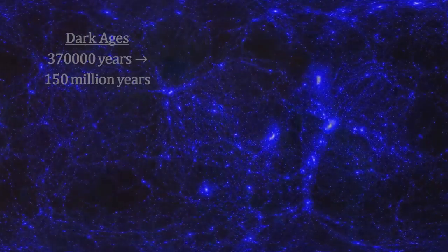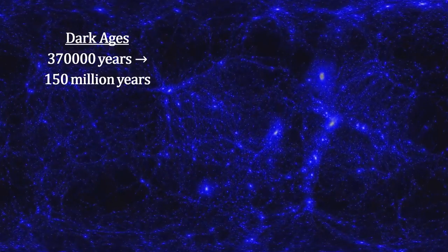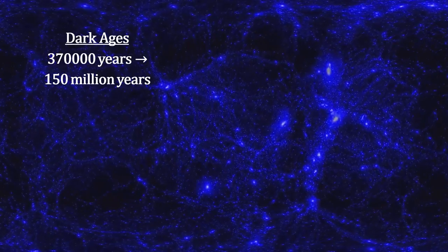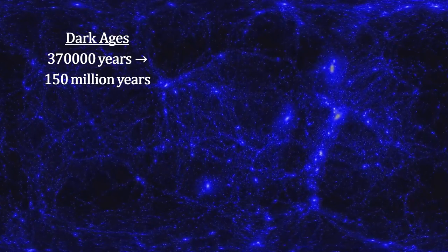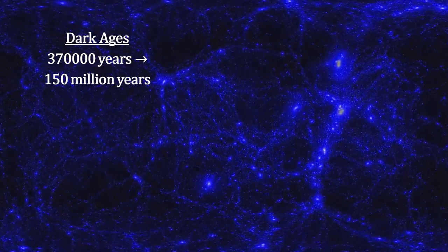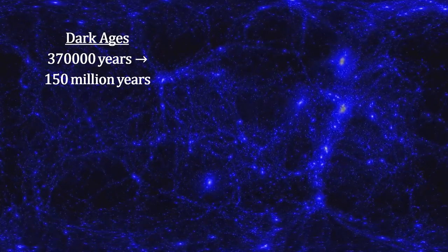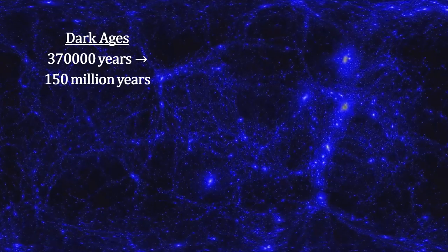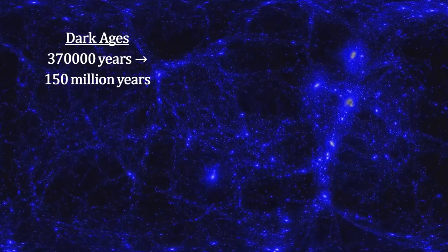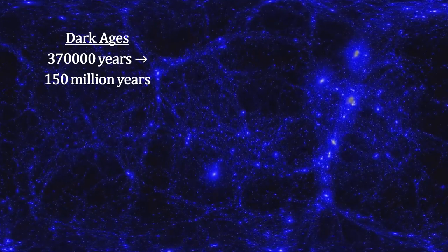The sky darkened as the expanding universe stretched the bright surface of last scattering radiation into the infrared range. With no stars having formed to give off light, the universe literally went dark. During this time, the caustic process worked the dark matter into filaments, with the baryonic matter tagging along. During this time, the universe left thermal equilibrium.